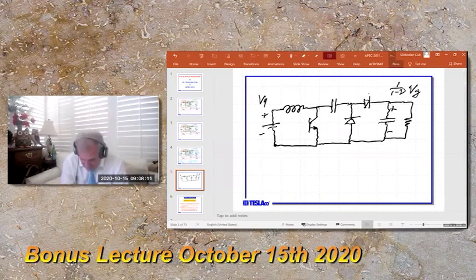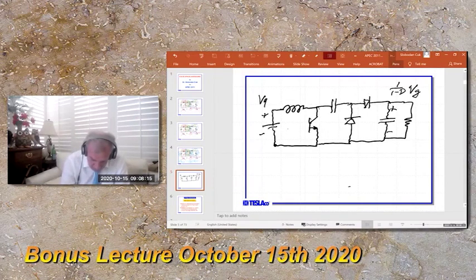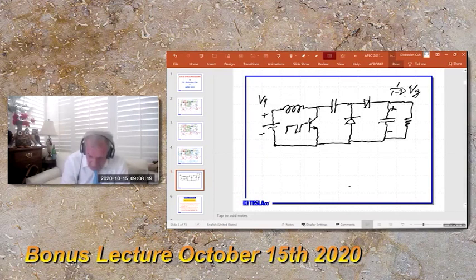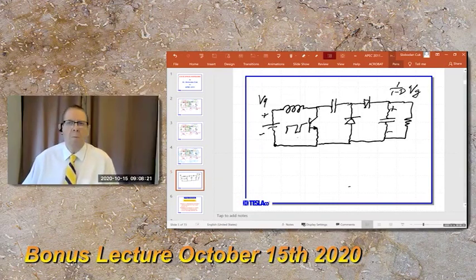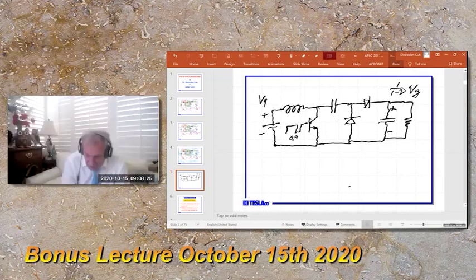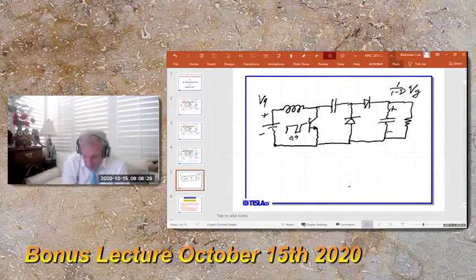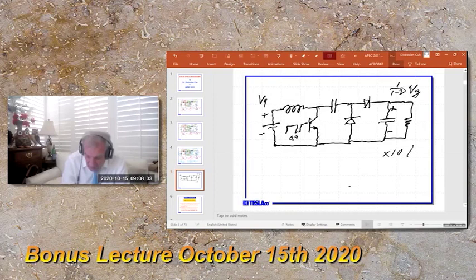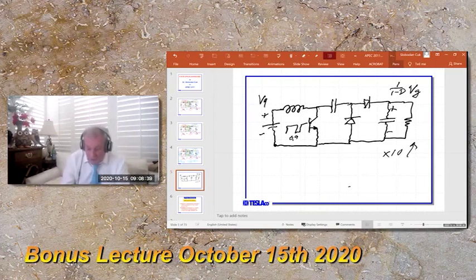So it's great to do step up. If it is point nine duty ratio of this switch, this is one over point one, one minus point nine, one over point one. Hey, it's stepping up ten times. That's not bad, right? You get a large step up and only three switches. Okay?